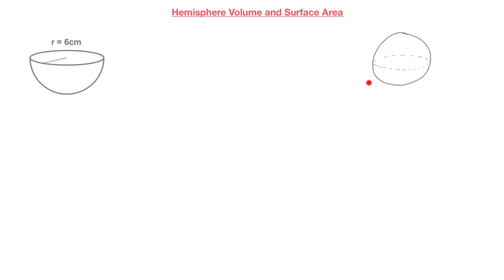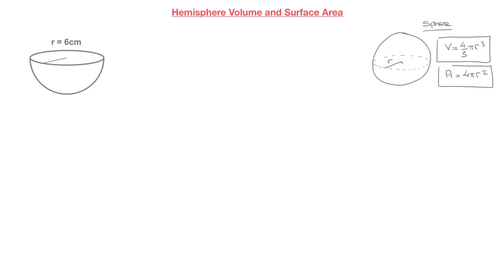On the right-hand side of the screen here, I've made a quick sketch of a sphere. Let's say its center is right here, and its radius is equal to r. We've already seen that the volume of a sphere is given by the formula V = 4/3 π r³. And we've seen that its surface area, which I'll call A, is equal to 4 π r². These are the two formulas we've already seen and that we'll use to find the formula for a hemisphere.